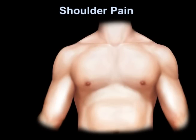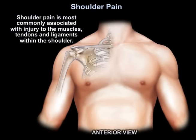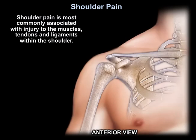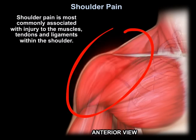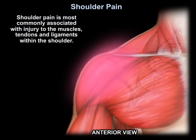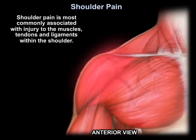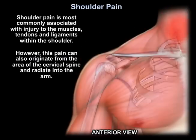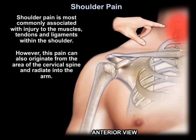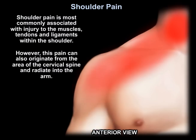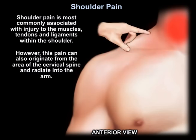Shoulder pain is most commonly associated with injury to the muscles, tendons, and ligaments within the shoulder. However, this pain can also originate from the area of the cervical spine and radiate from the neck into the arm.